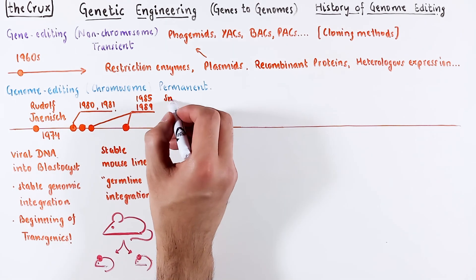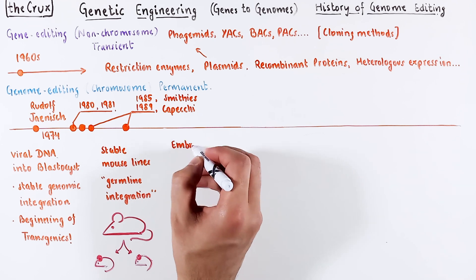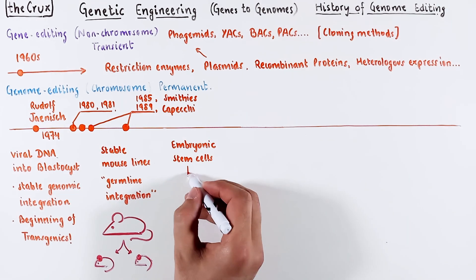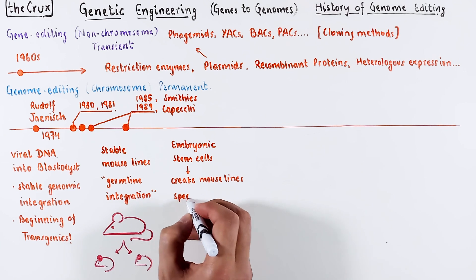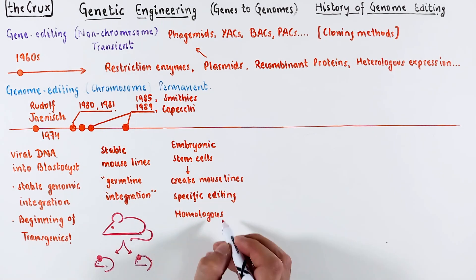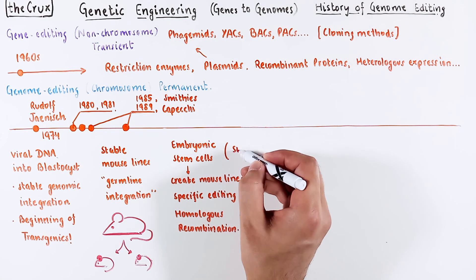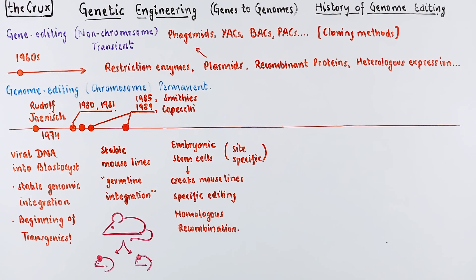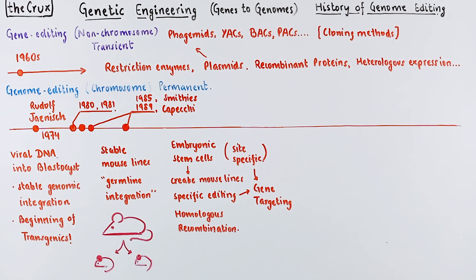A few years later, Smithies and Capecchi came up with something even more impressive. They were able to take embryonic stem cells from mice, grow the cells successfully, edit the genome at a specific location by relying on homologous recombination, and make mouse lines from these edited embryonic cells. This site-specific approach opened the world of gene targeting while earning Capecchi and Smithies a Nobel Prize. This gene targeting approach is in contrast to all previous attempts, where the integration of DNA happened at any random spot in the mouse genome.